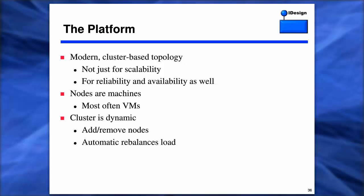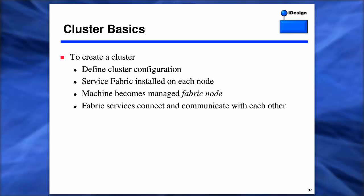Let's look at the platform a little bit and dive deeper into the basics. As you would expect for it to be scalable, available, and reliable, the service fabric is a cluster-based topology. Nodes are machines, most often VMs. The cluster is dynamic — you can add and remove nodes, and in response it will do its best to automatically rebalance the load. Creating a cluster is fairly straightforward with a very simple cluster configuration. When you're in Azure, that configuration is scripted in the form of a wizard. When you're in the on-premises experience, there are templates that make it very simple — all you have to do is define the machines included in your configuration, accept the rest of the default settings, and the service fabric tooling will automatically deploy the fabric onto each node.